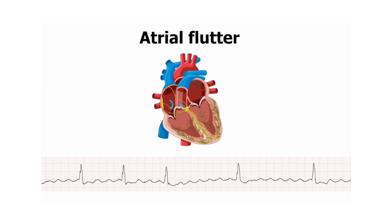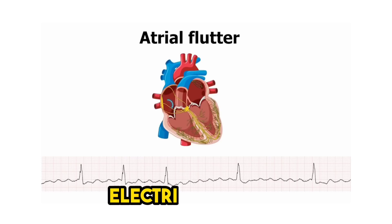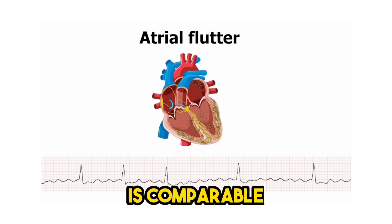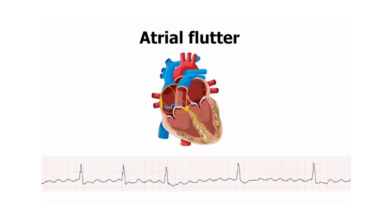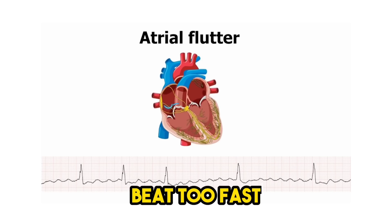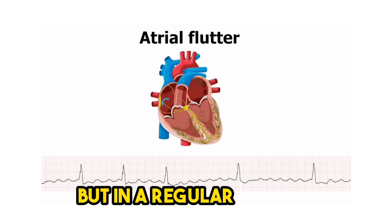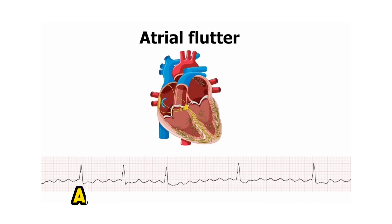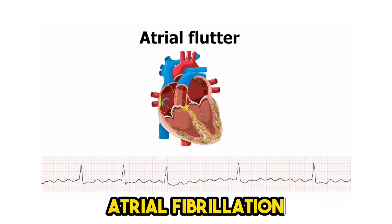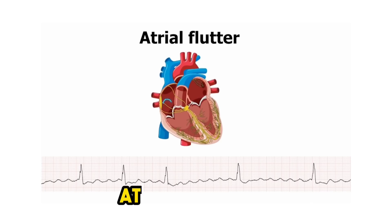Atrial flutter is a form of heart rhythm disturbance, or arrhythmia, caused by electrical system issues in the heart. Atrial flutter is comparable to atrial fibrillation, a common disease in which the heart beats irregularly. The upper chambers of the heart, the atria, beat too fast in atrial flutter, causing the heart to beat quickly but in a regular pattern. Atrial flutter patients have a better structured and less chaotic cardiac rhythm than atrial fibrillation patients. A person may have both atrial flutter and atrial fibrillation at the same time.